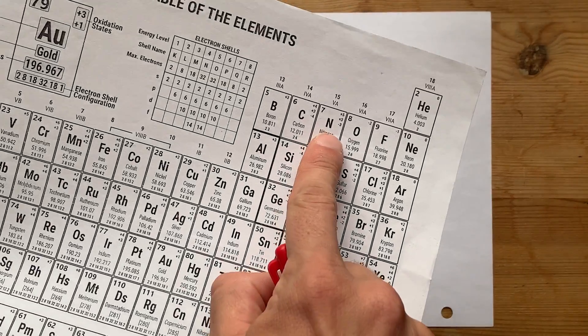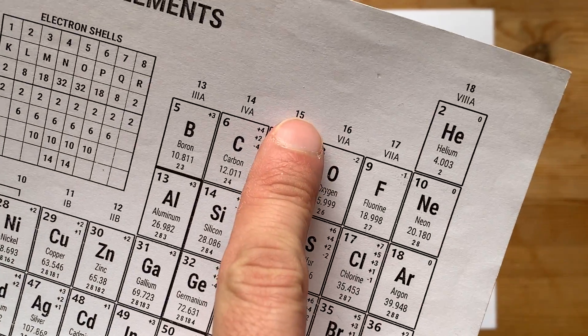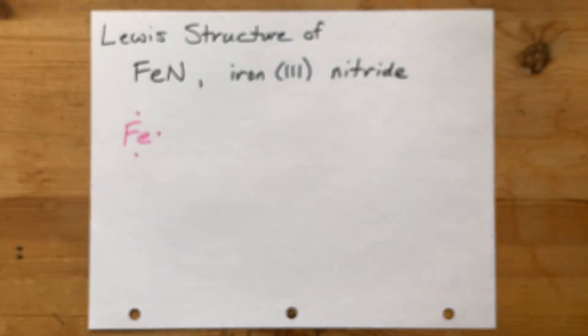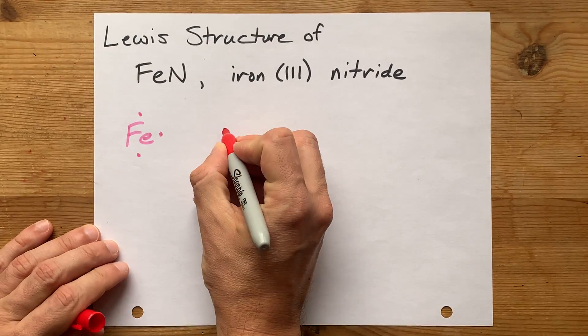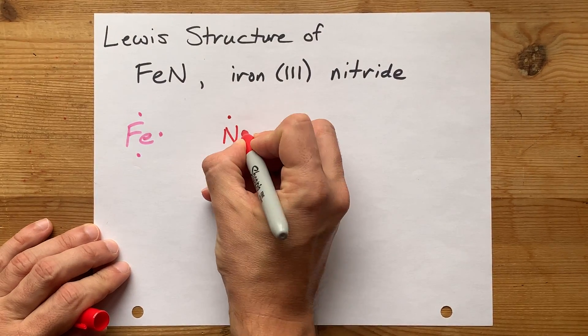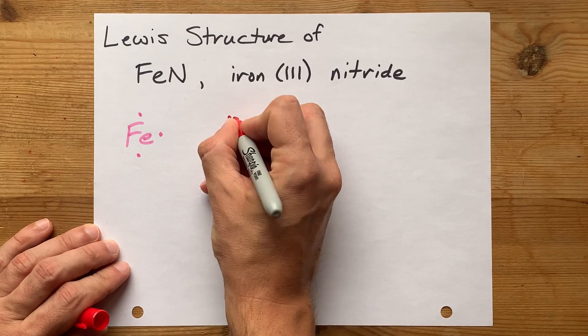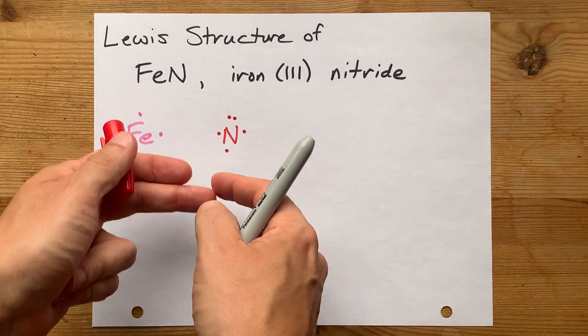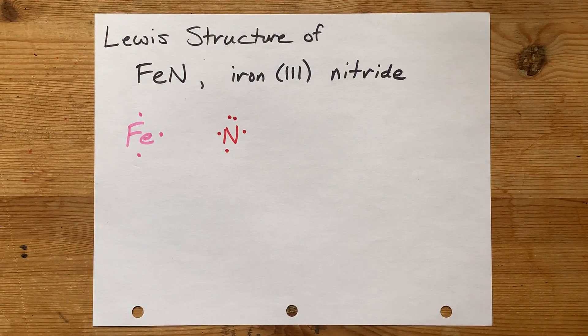Nitrogen is a non-metal in group 15. It's going to bring 5 valence electrons with it. So I'm going to draw an N here and do 1, 2, 3, 4, 5. Note that I spread them out before I started doubling them up.